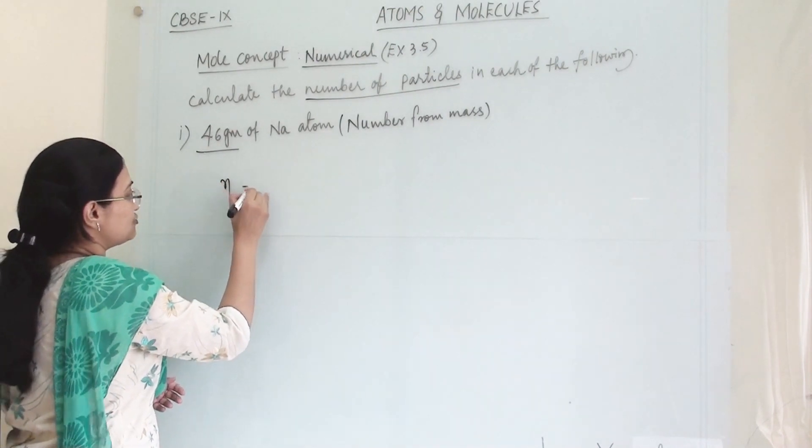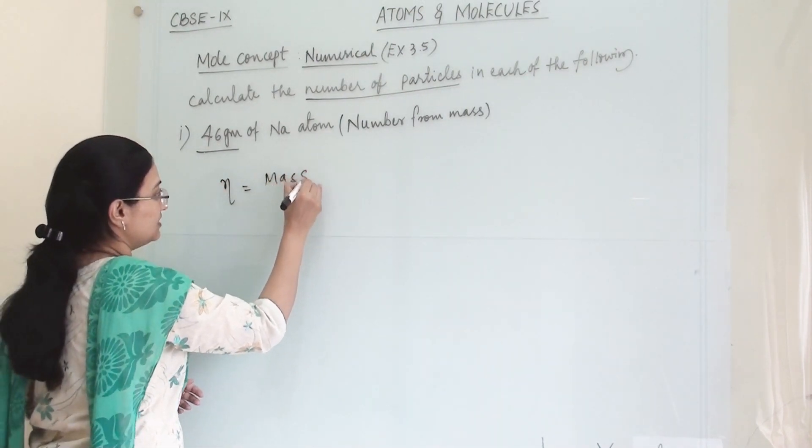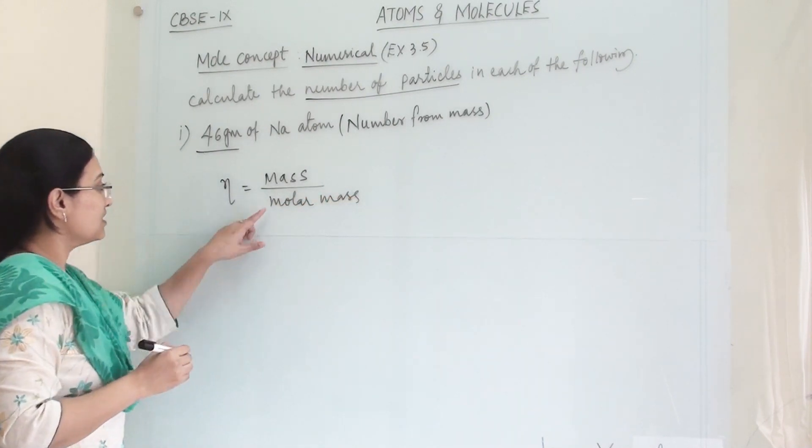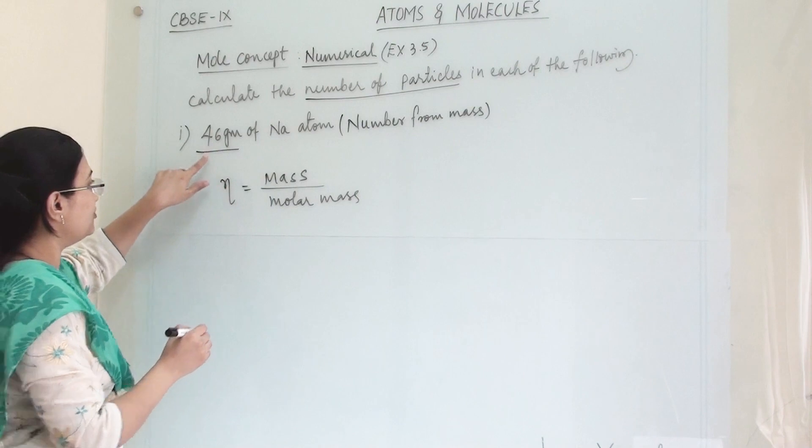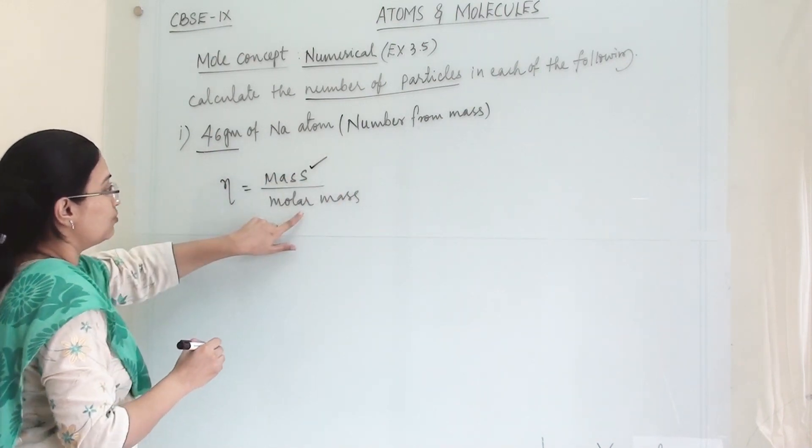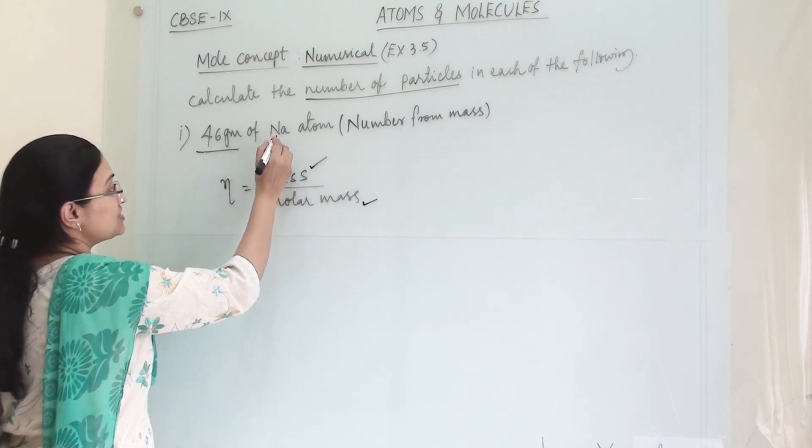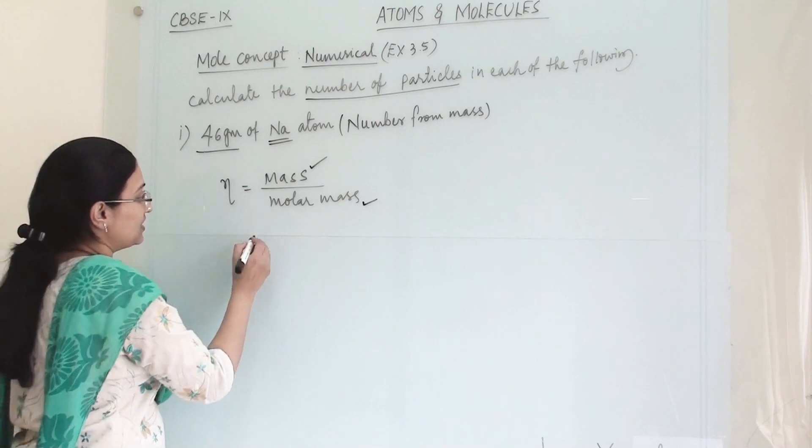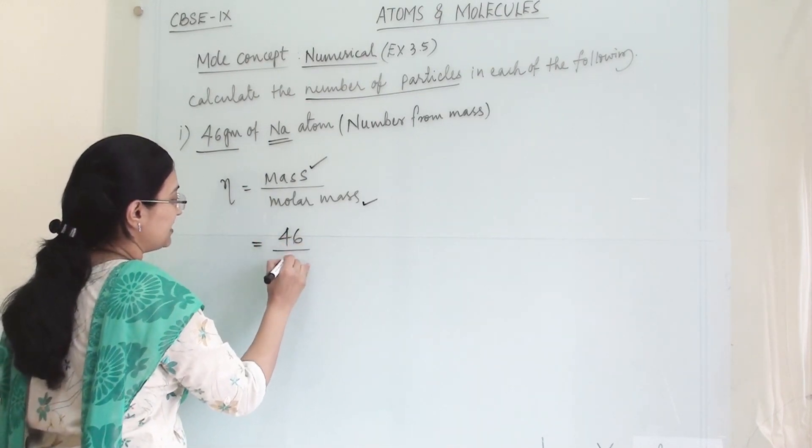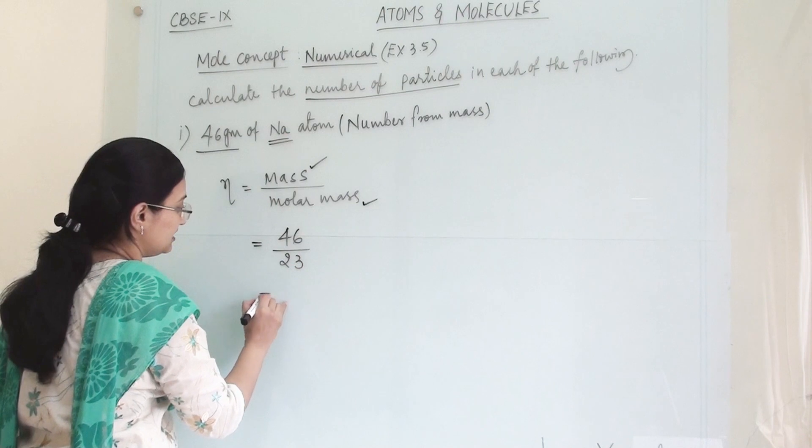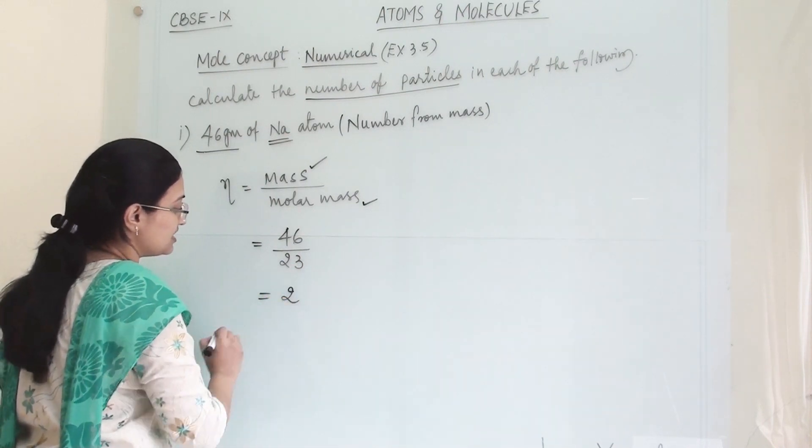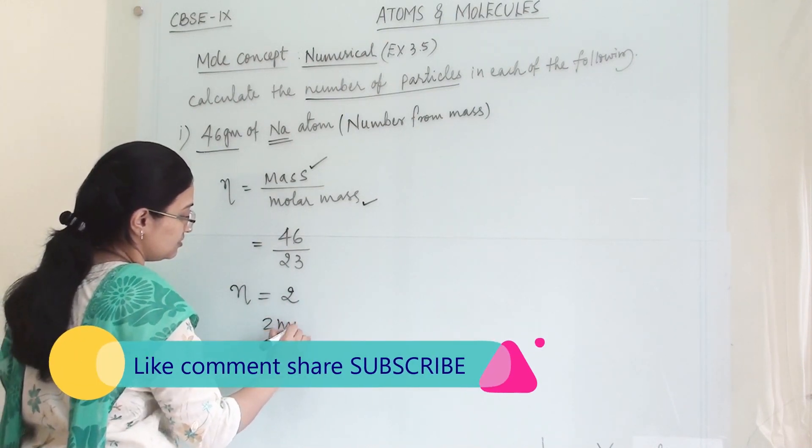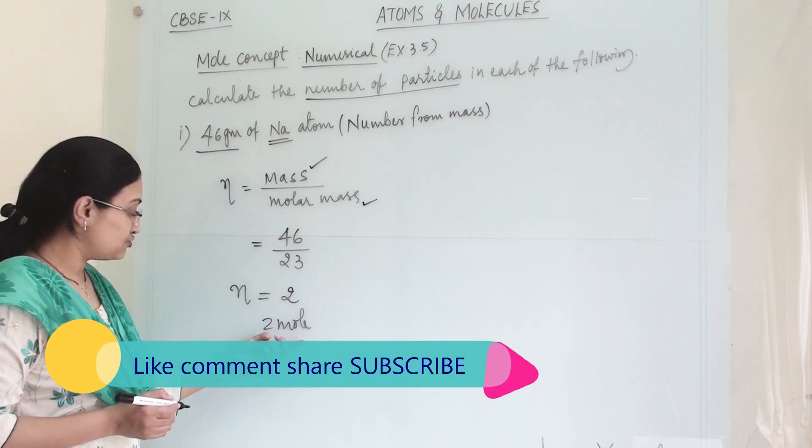So n equals mass divided by molar mass. This is our standard formula. The molar mass we know because sodium atom's atomic mass is 23. So here it is 46 divided by 23. So our answer is 2. The number of moles is 2.